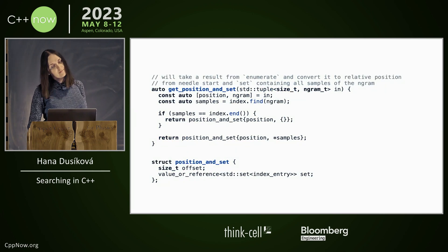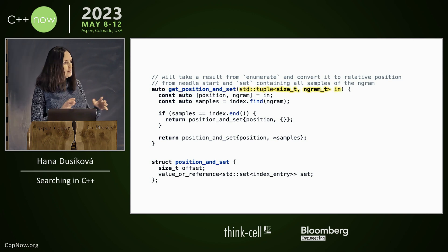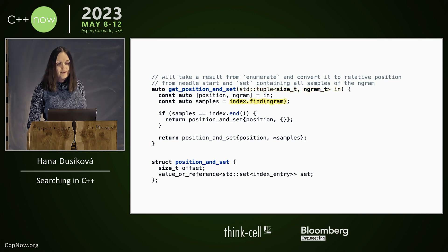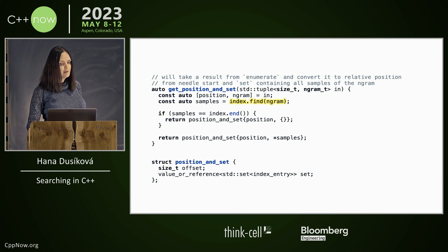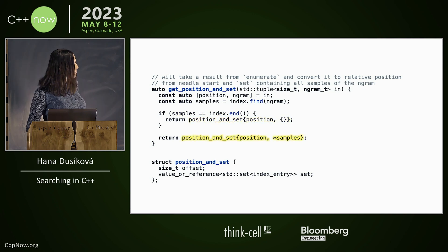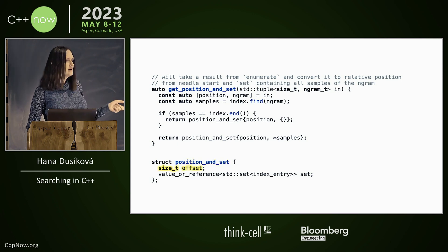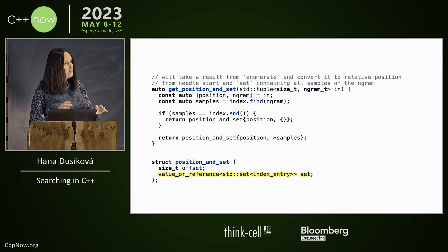Then let's have a function get_position_and_set, which will take the tuple of set and ngram, which is from the image. Then you will find the appropriate set of samples. And if there is none, you will return an empty position and set. Otherwise, you will return a reference to samples. Position and set is just position against the start of the string. And there is some magic type which is value or reference to something, because it's really useful.